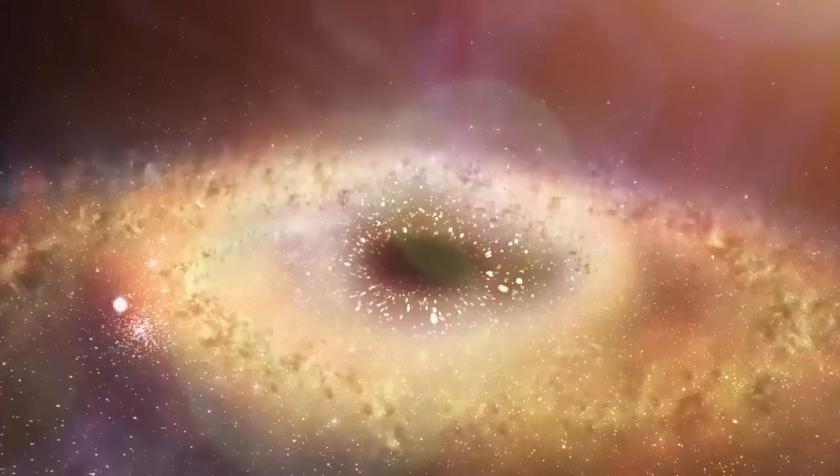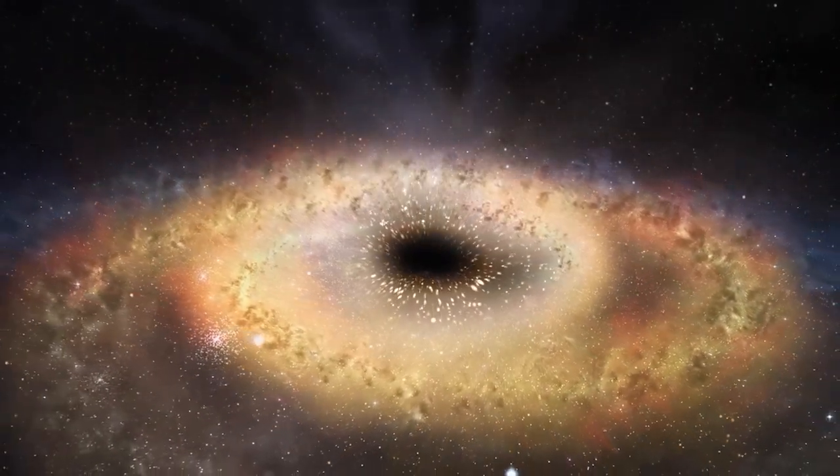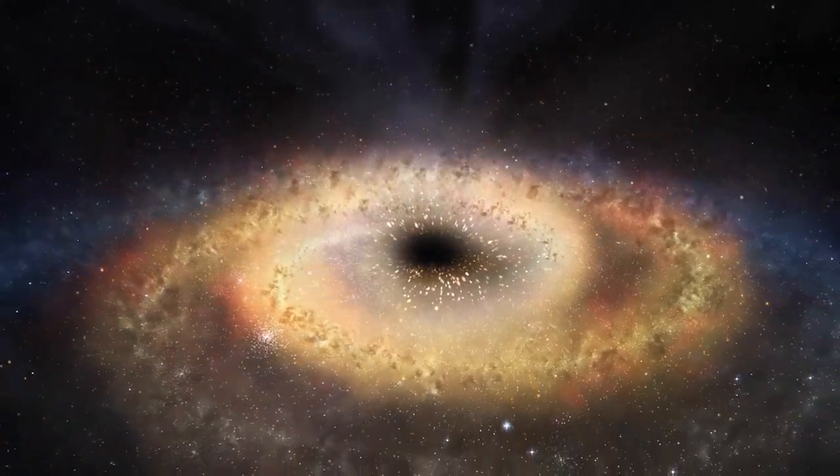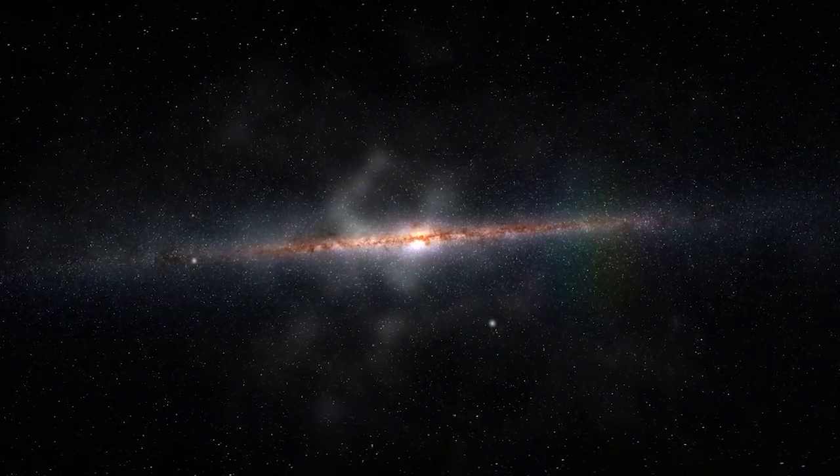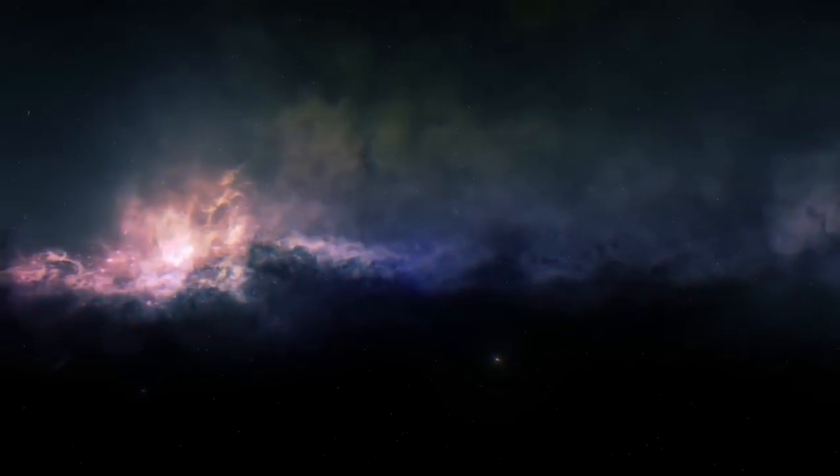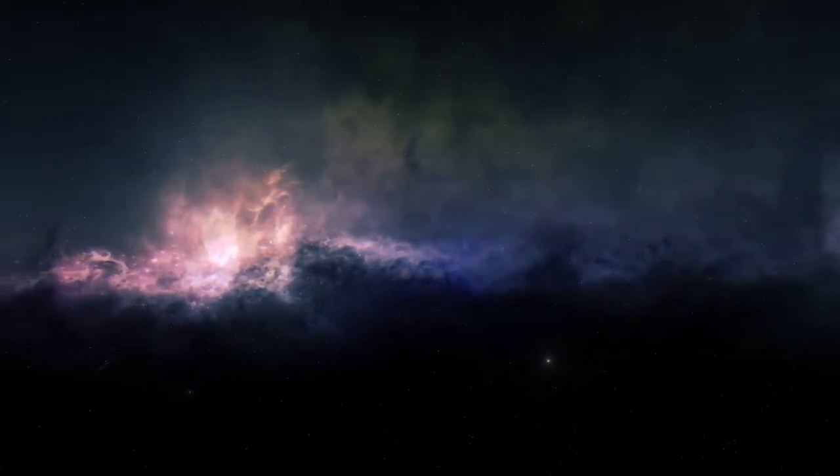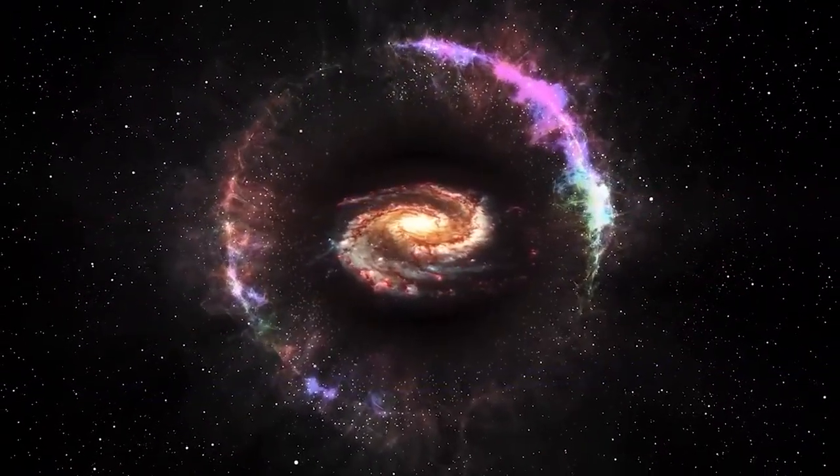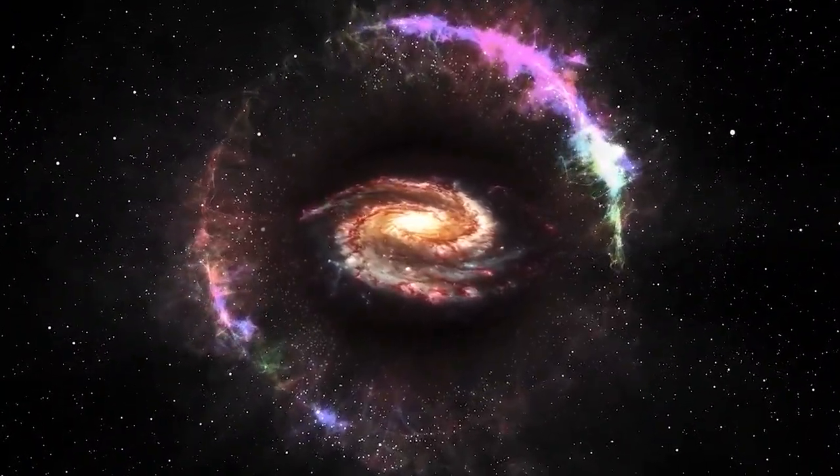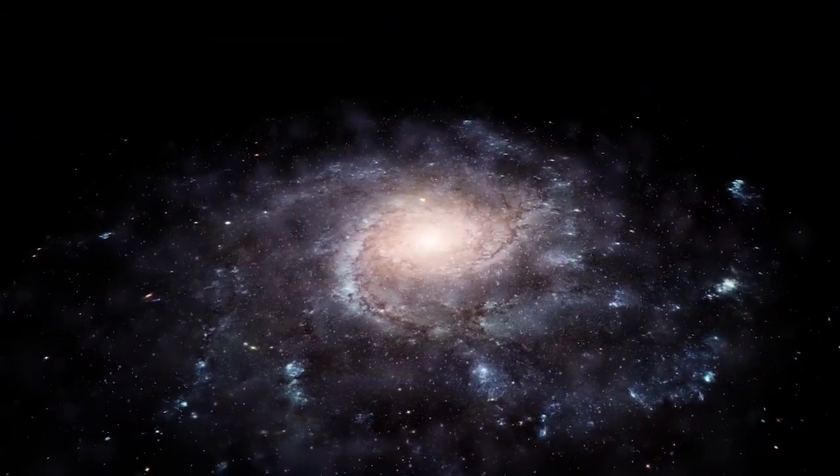As a result, the EHT team took tens of thousands of images of Sagittarius A-star, and the final image was created by averaging all the pictures and highlighting elements in common. Despite being 1,500 times more massive and 2,000 times farther away than Sagittarius A-star, M87's black hole has a comparable angular diameter. They resemble each other greatly in appearance.